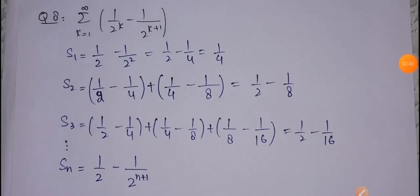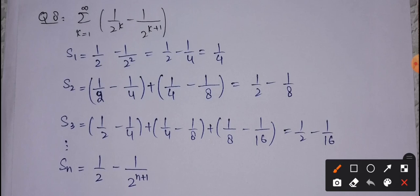For example, here we have question number 8 from the exercise. We are given the series summation k from 1 to infinity of (1/2^k minus 1/2^(k+1)), and we must check whether it is convergent or divergent. We will examine the sequence of partial sums. S_1 is the first term: putting k equal to 1 gives 1/2 minus 1/4.